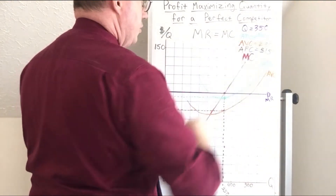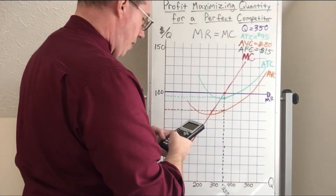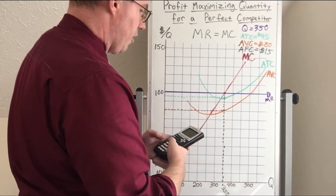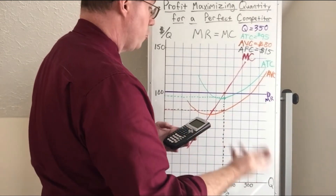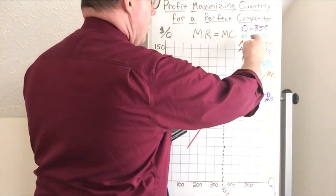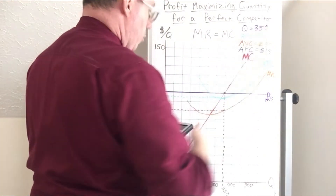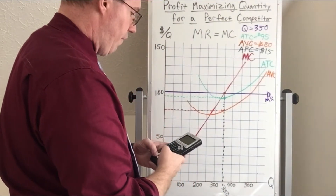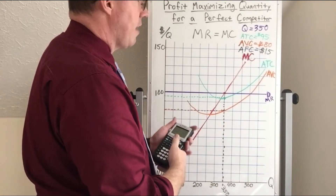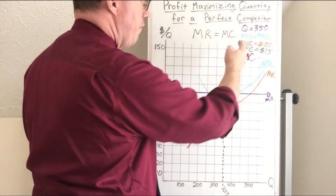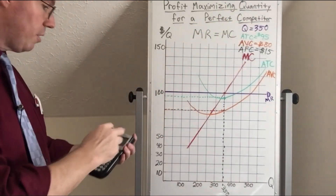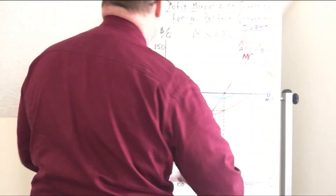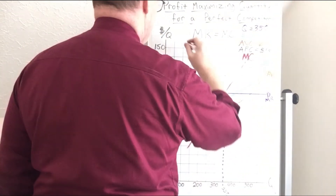Now average variable cost, $80 times 350, gives us variable costs of $28,000. If we multiply average total cost by quantity, $95 times 350, that gives us total costs of $33,250.